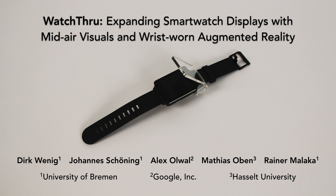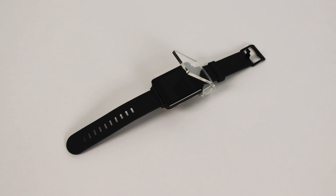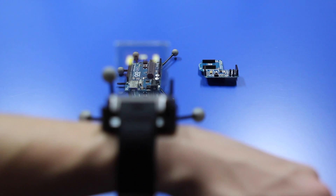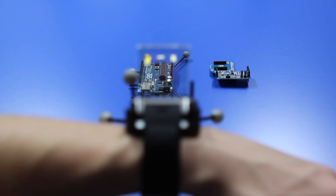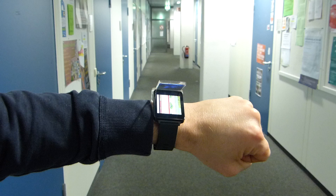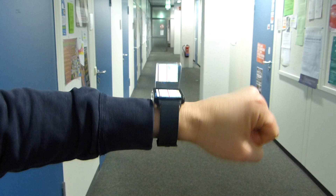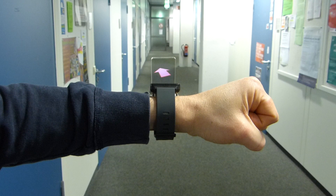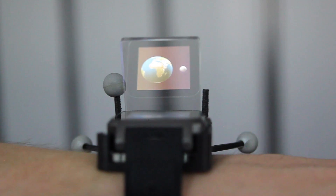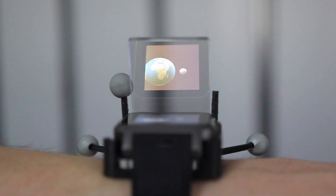We present the watch-through concept. By attaching an additional semi-transparent screen to a smartwatch, we extend the output space and enable different novel interactions. Content can only be displayed on the main screen itself, but with the help of the semi-transparent screen, content can also be displayed so that it appears floating over the main screen. This enables novel interactions that enrich short-glance interactions with smartwatches.